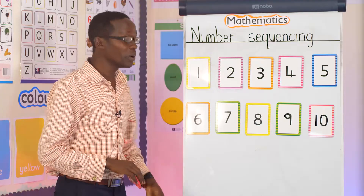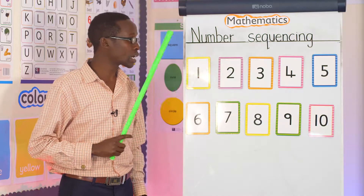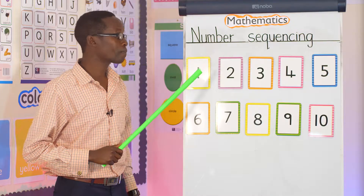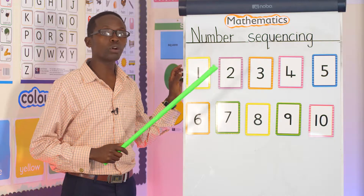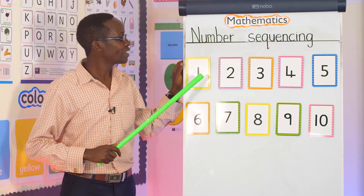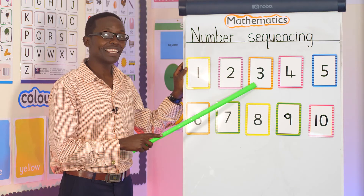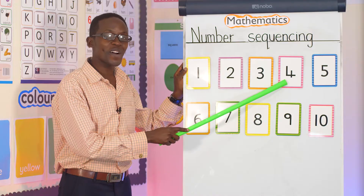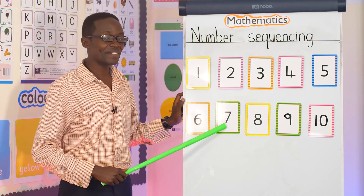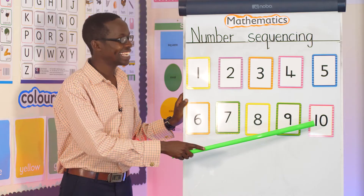That's wonderful. Now, look here — I have numbers on my board. I want us to count, to read, and you read loudly. Teacher David is here. Look here. Can you see them? One, two, three, four, five, six, seven, eight, nine, ten.